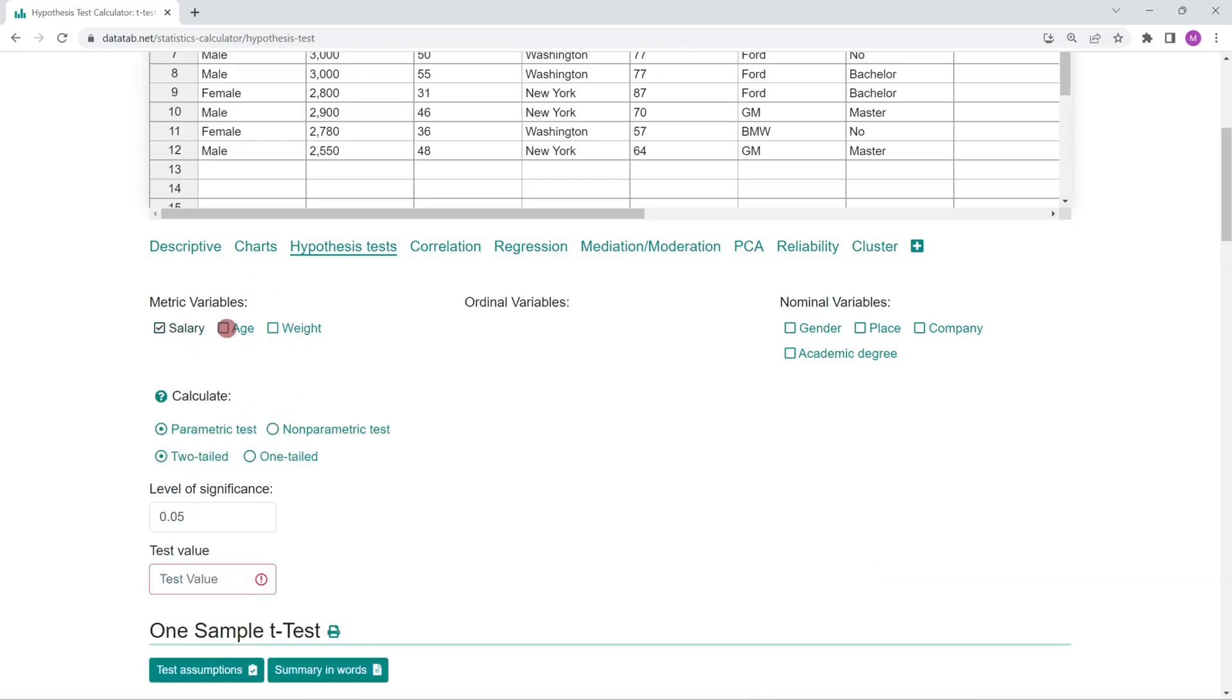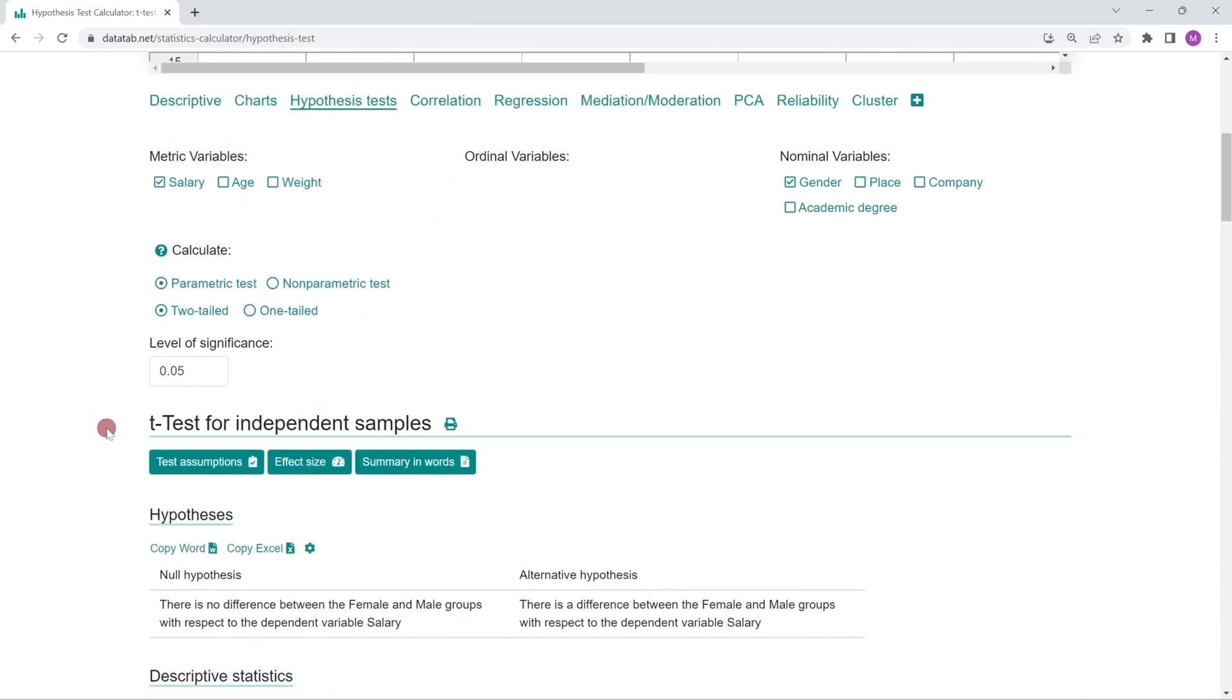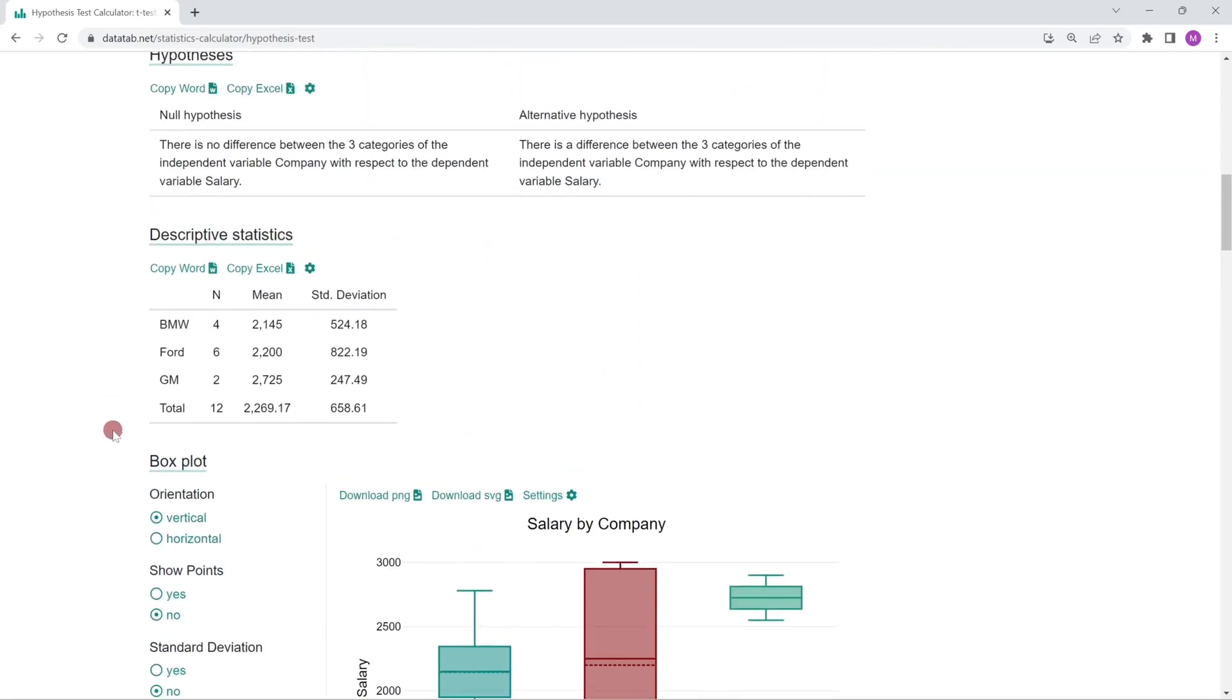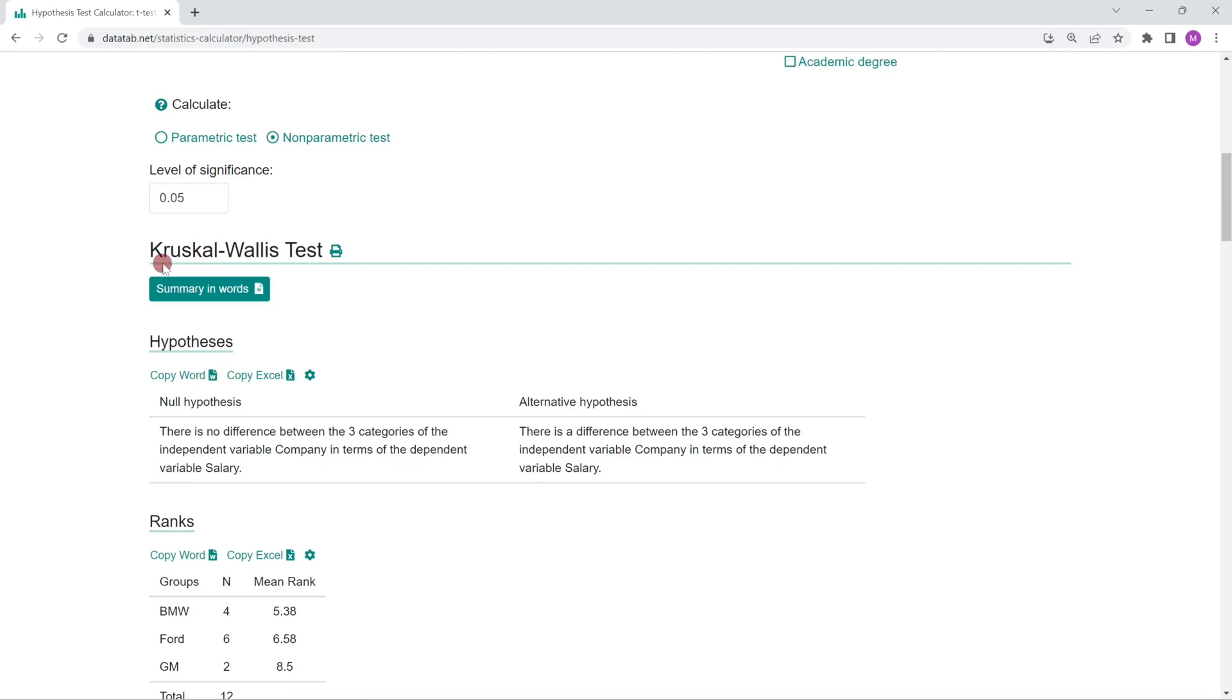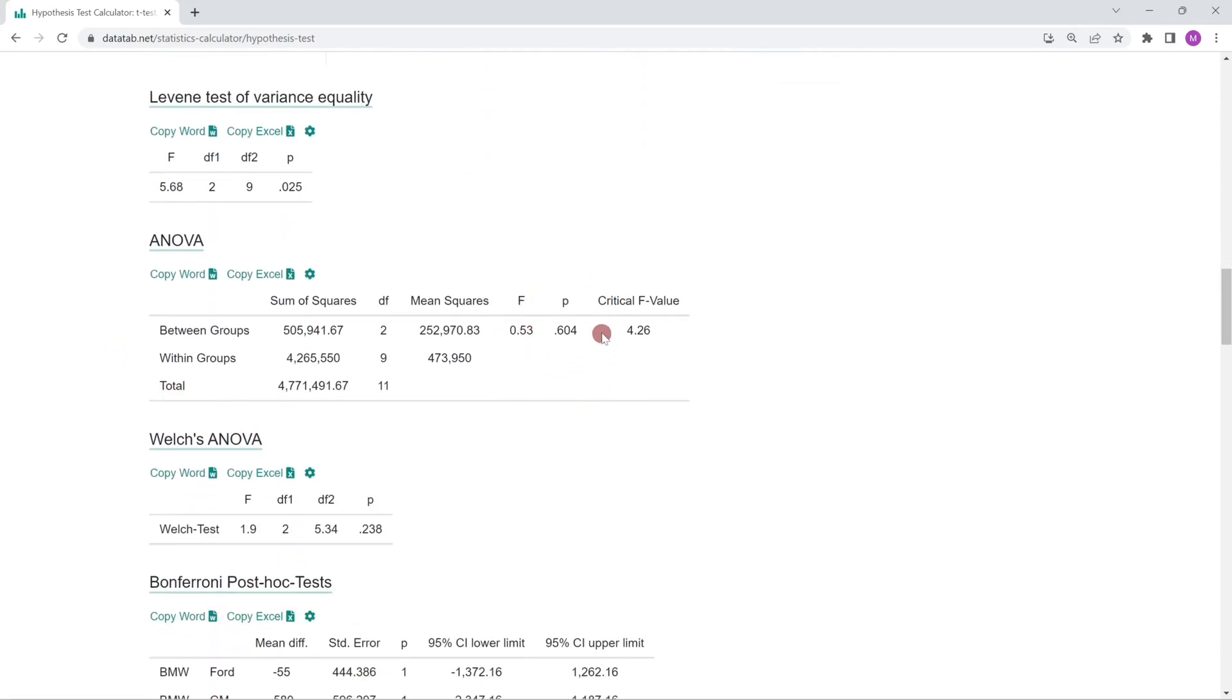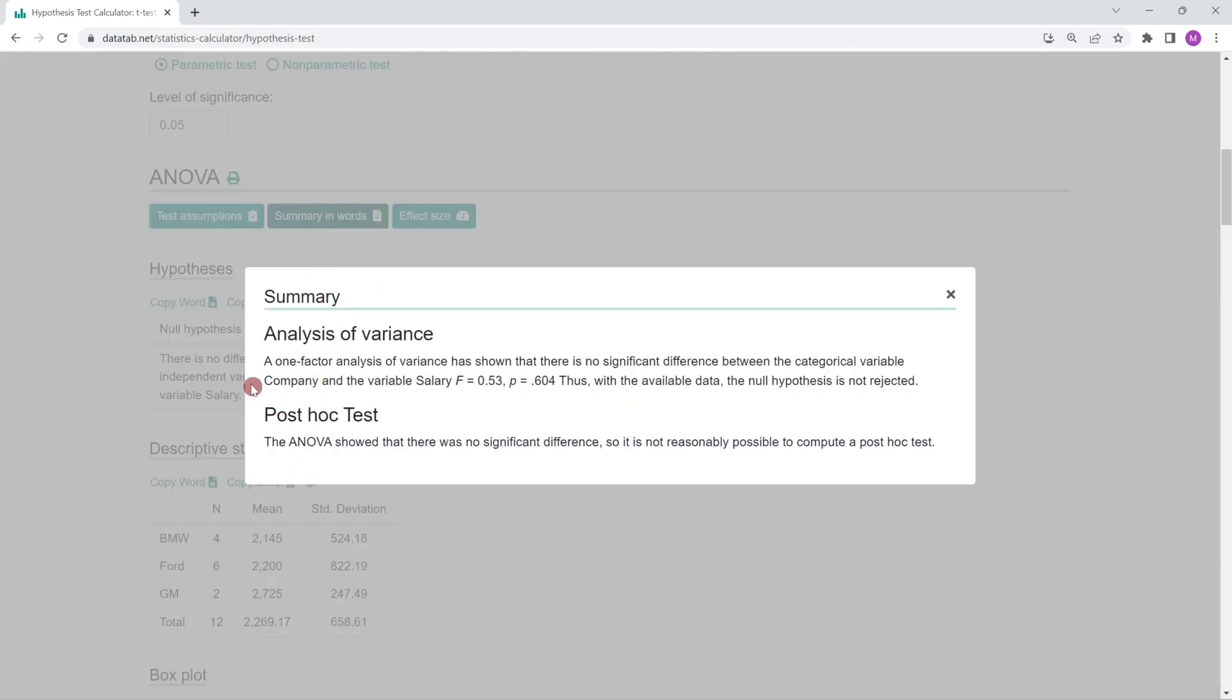For example, if you click on salary and gender, a t-test for independent samples is automatically calculated. If you click on salary and company, for example, an analysis of variance is automatically calculated. If your data is not normally distributed, you can also calculate the non-parametric counterpart. If you now scroll down, you will find the p-value. If you are not sure about the interpretation, you can click on interpretation in words. A one-factor analysis of variance has shown that there is no difference between the categorical variable company and the variable salary. Thus, with the available data, the null hypothesis is not rejected.